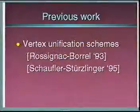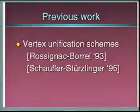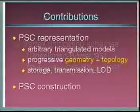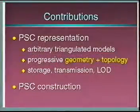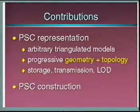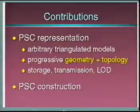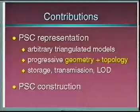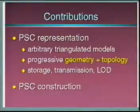Some existing model simplification methods use the concept of vertex unification to allow the topology to simplify. In this work, we use that concept to generalize progressive meshes to allow topological changes. The new representation, progressive simplicial complexes, is able to capture arbitrary triangulated models, and it does so by progressively encoding both the geometry and topology of the model in a unified framework.